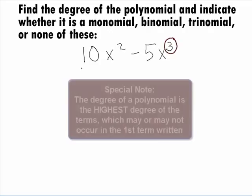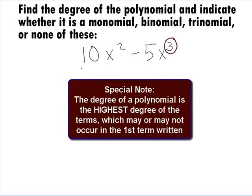Special note: it is tempting to say that the degree on this polynomial is 2 because that is our first term written in this example. However, the degree of a polynomial is the highest degree of a term, which may or may not occur in the first term written.